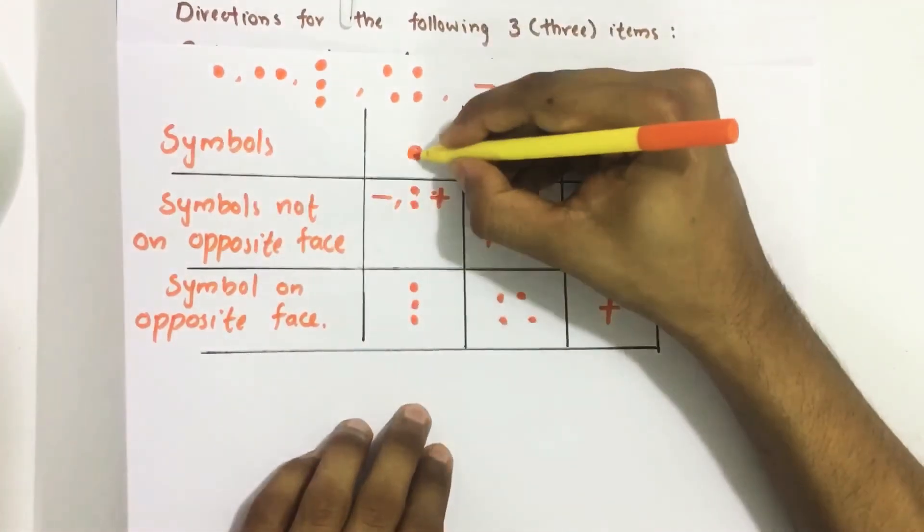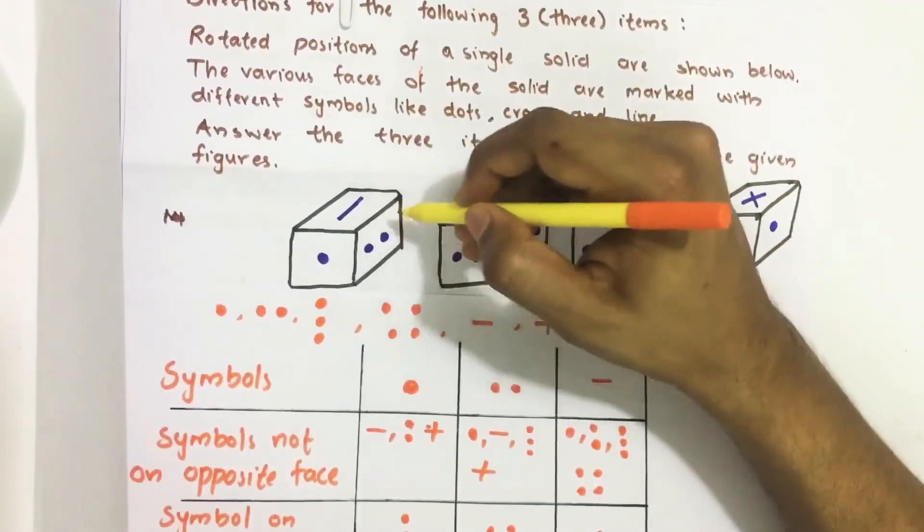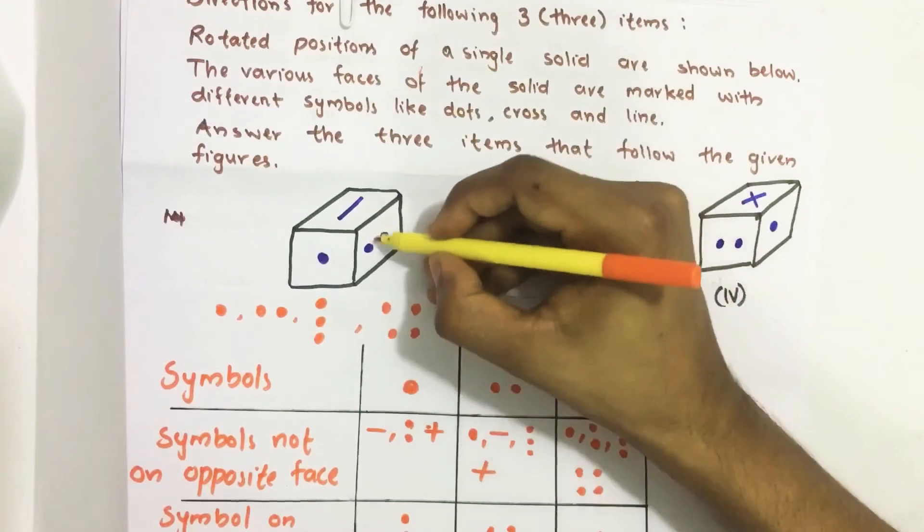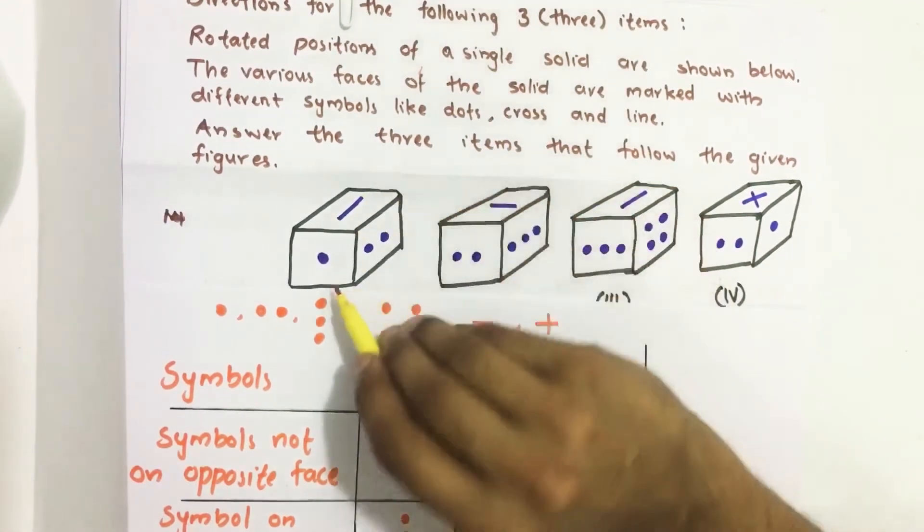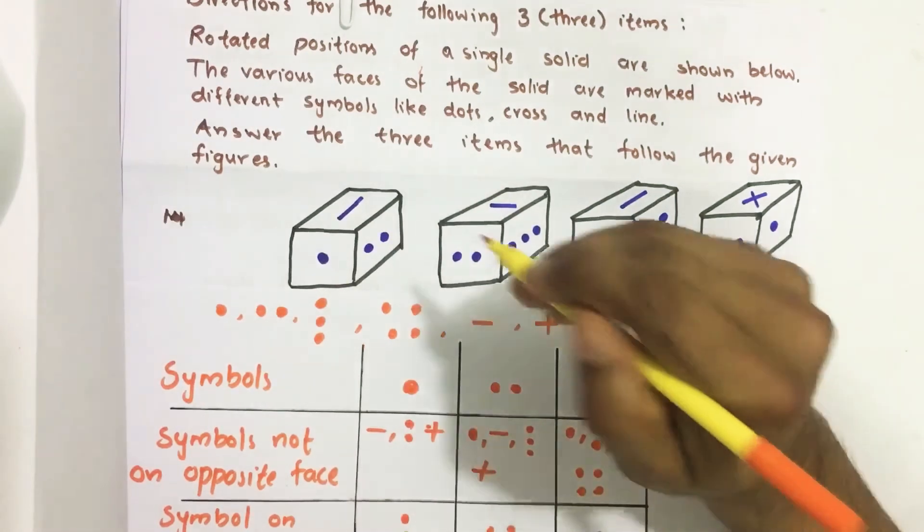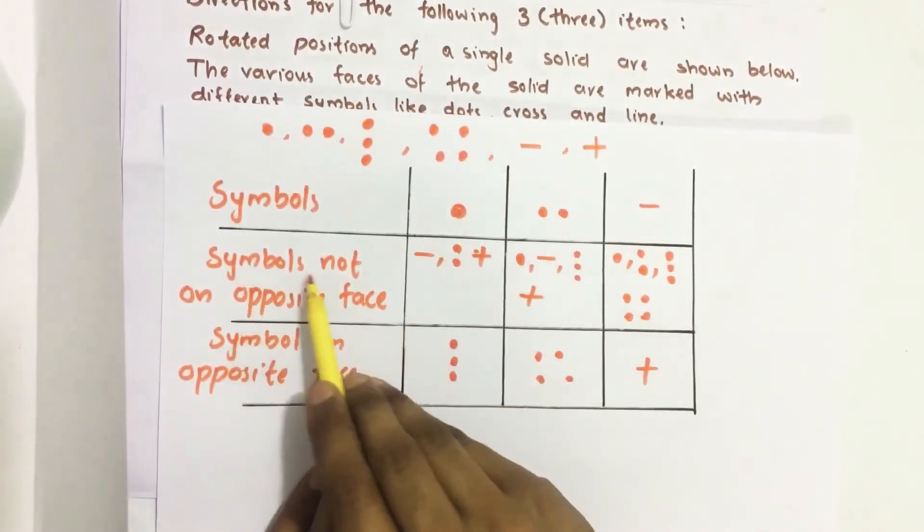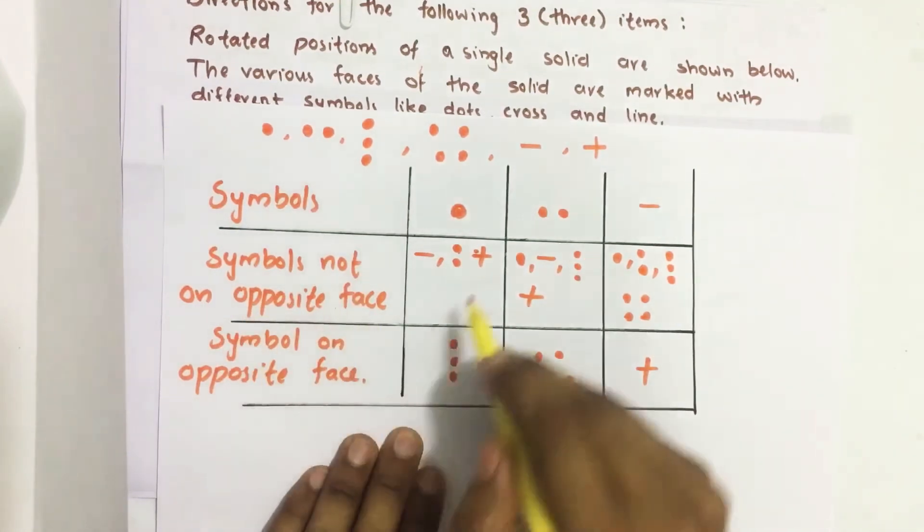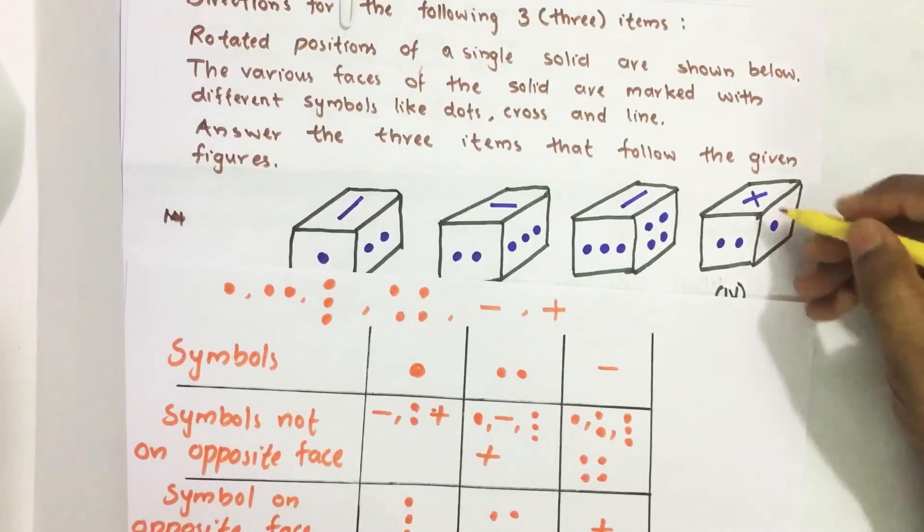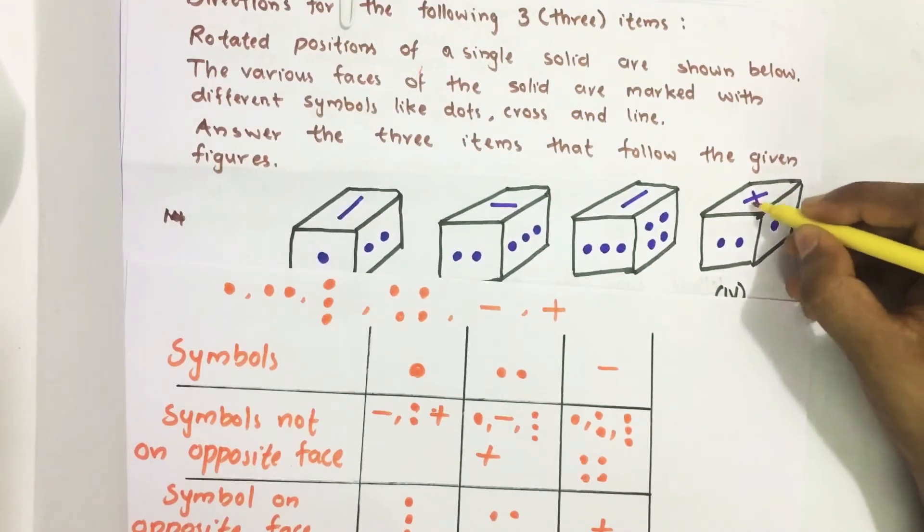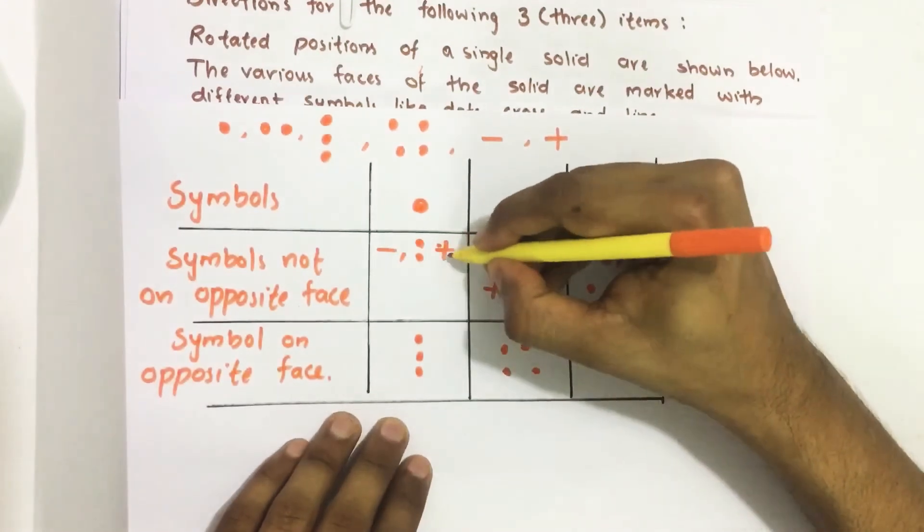First I consider the dot. Then from the first figure, double dot and line are on the adjacent face of the single dot face. So these are not on the opposite face. Here it is symbols not on the opposite face. Similarly from fourth figure, we understood that cross mark also not on the opposite face. So I wrote here.